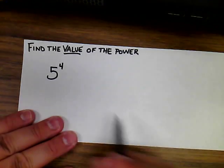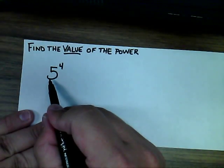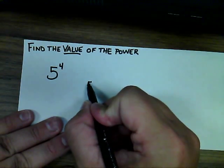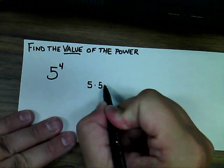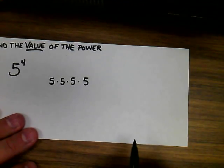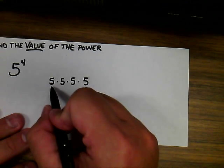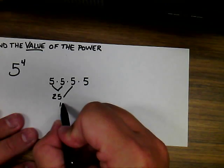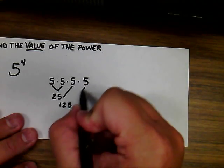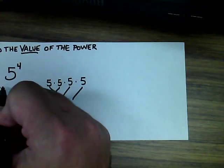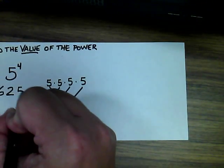When asking to find the value of the power, it is helpful to write it in the expanded form. So this power, 5 to the 4th power, could be written as 5 times 5 times 5 times 5. Now, when you break it down to find the value, you could do 5 times 5, which equals 25, then multiply that by 5, which equals 125, and then multiply that by 5 to get the final value of 625. So 5 to the 4th power equals 625.